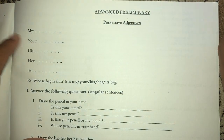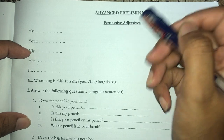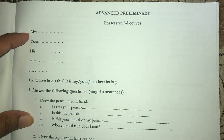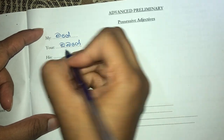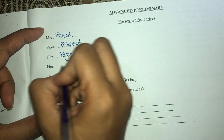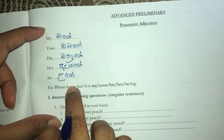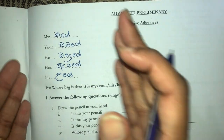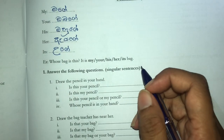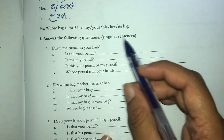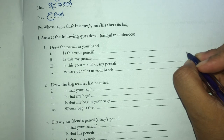First of all, we have to talk about possessive adjectives. Possessive means something that belongs to you or me. So: 'my' in Sinhala is 'mage', 'your' is 'obage', 'his' is 'ohage', 'her' - again similar. You have to answer in singular because the questions start with 'is', which is singular. Now you have to draw a pencil in your hand.